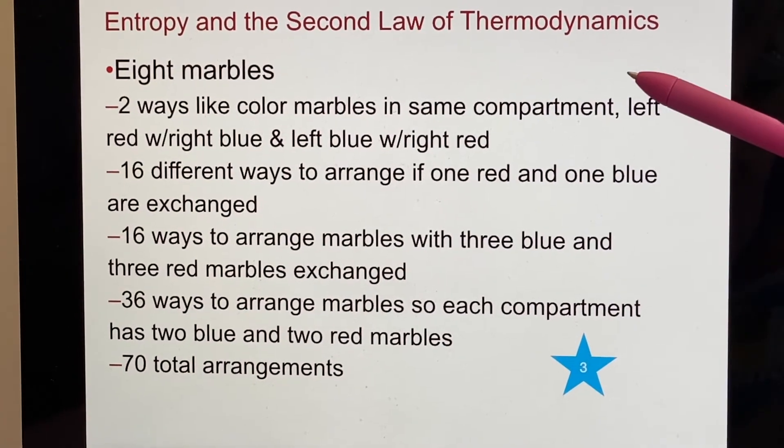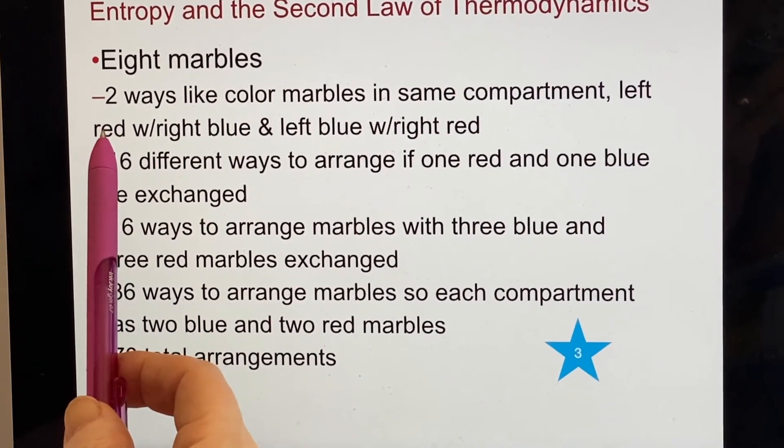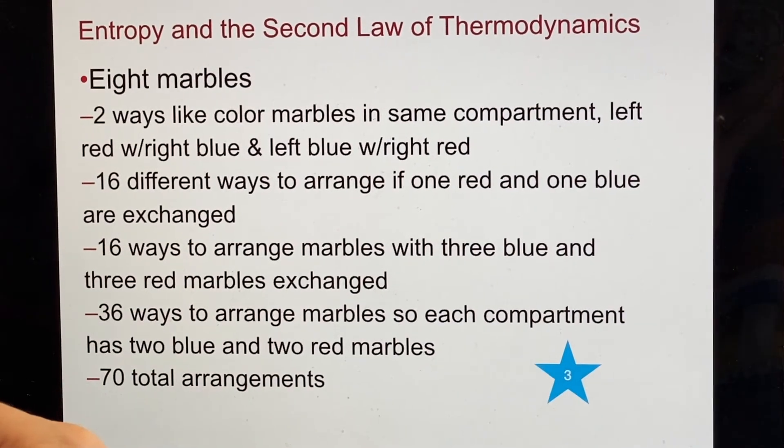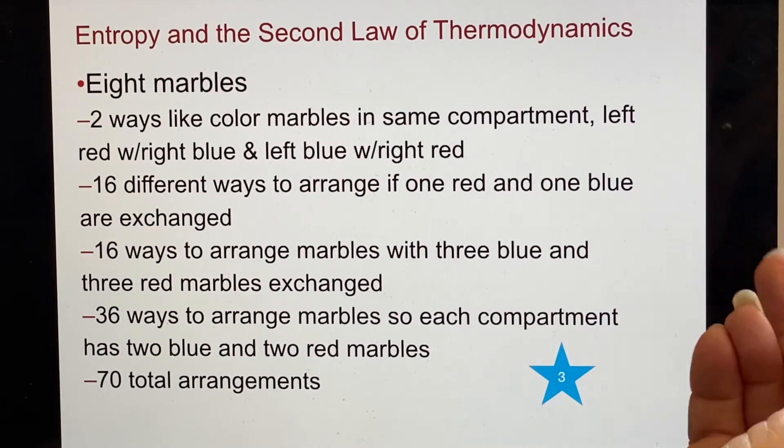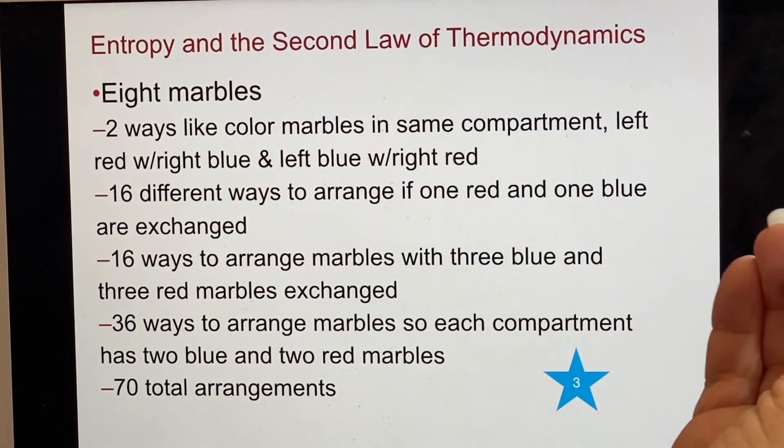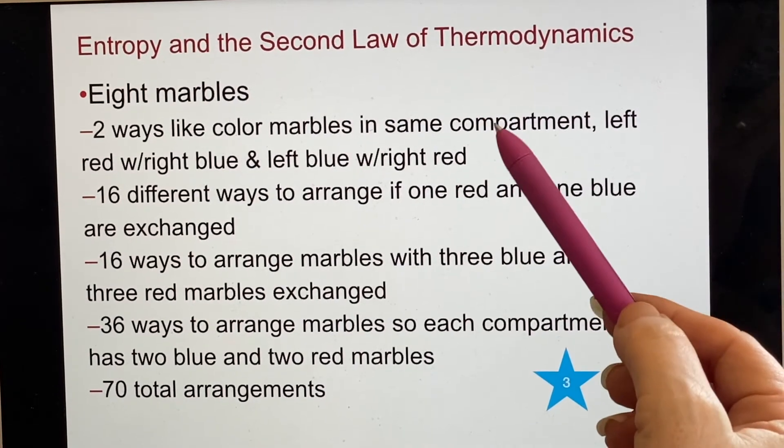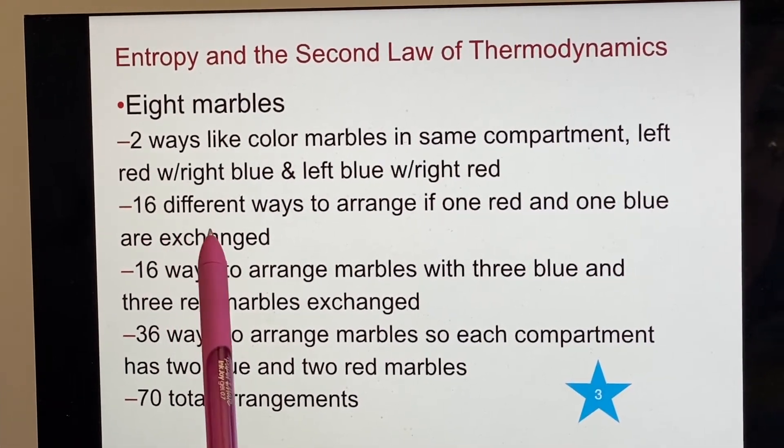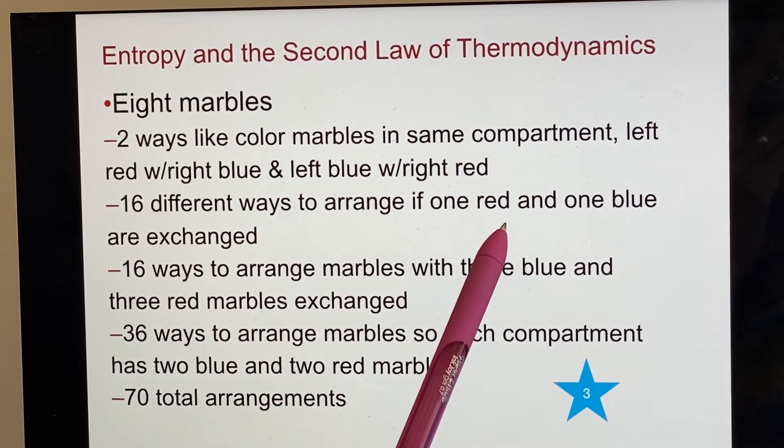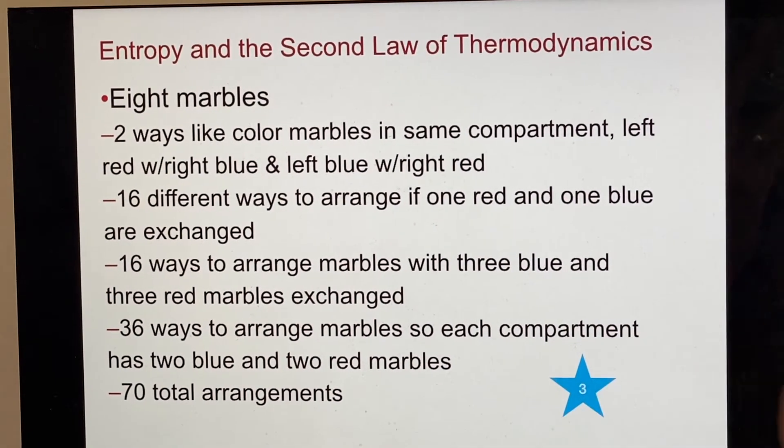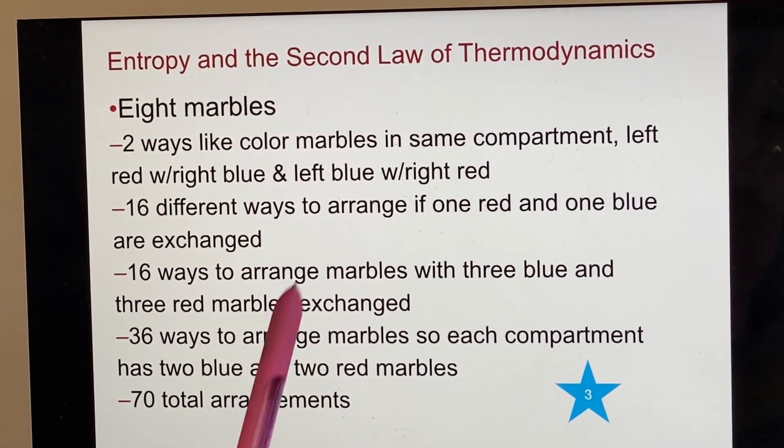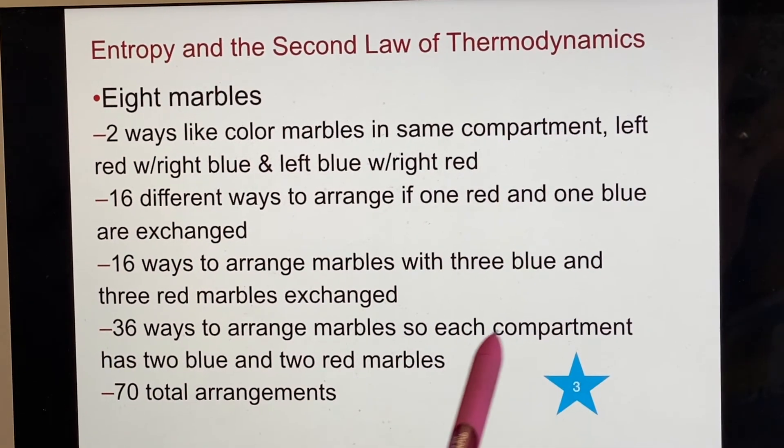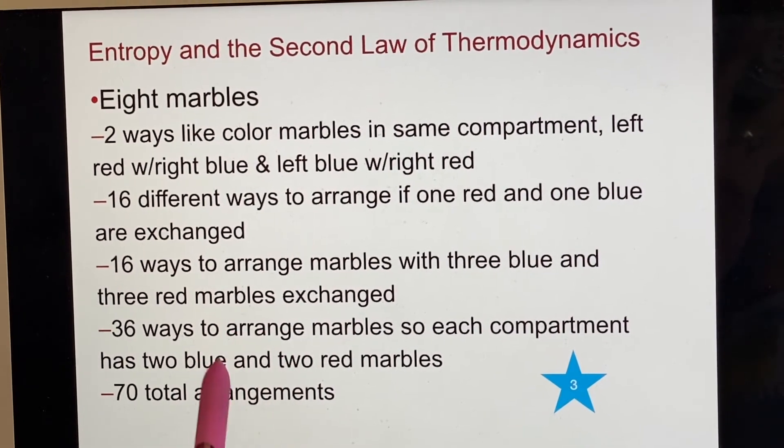So we'd like to do this now with eight marbles. There are still only two ways that you could have the marbles completely separated. One would have the left side with all the red marbles and the right side with the blue. The other one would be that the left side had all the blue marbles and the right side had all the red marbles. If you try it out, you come up with 16 different ways to arrange it if there's one red marble and three blues. Same thing if you do three and three exchange. And then there's 36 ways to arrange marbles so that each compartment has two blue and two red marbles.